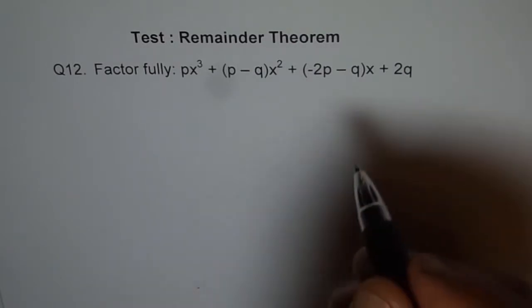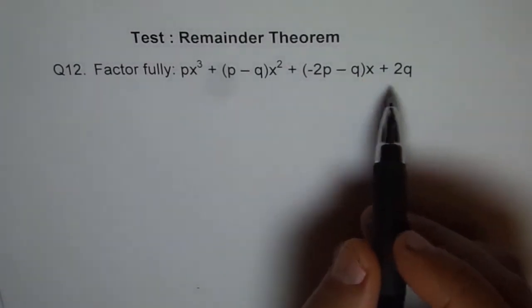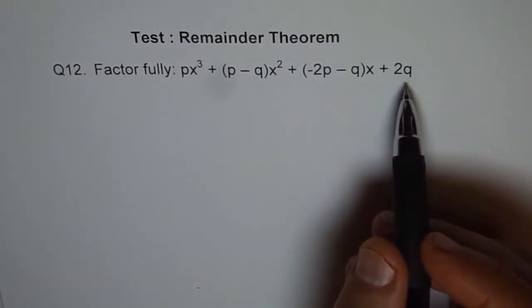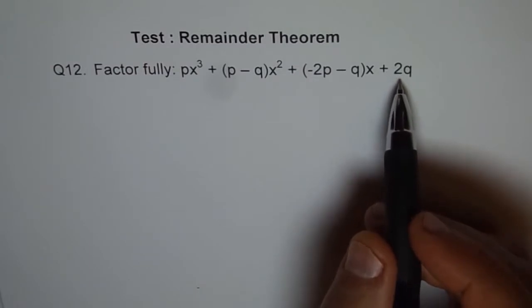In this problem, the possibility of factors could be factors of 2q, which is plus minus 1, plus minus 2. And those are the numbers which we need to try.